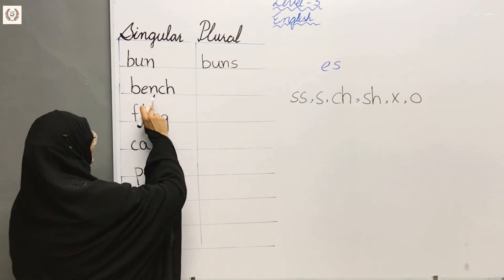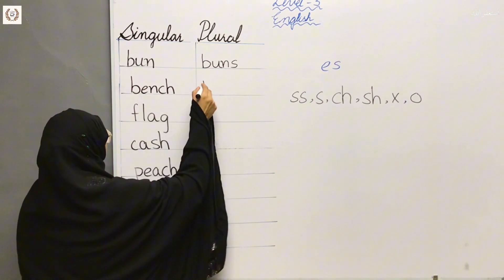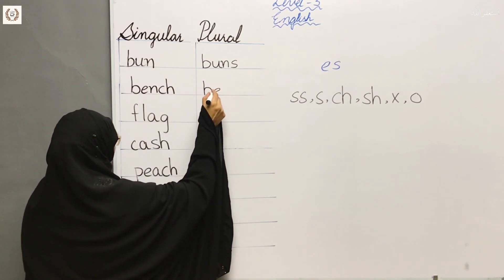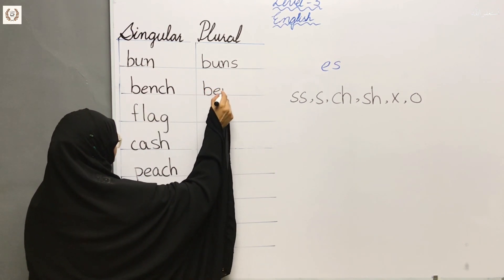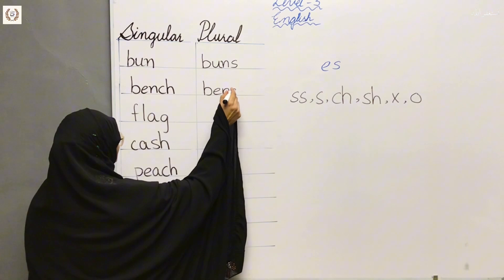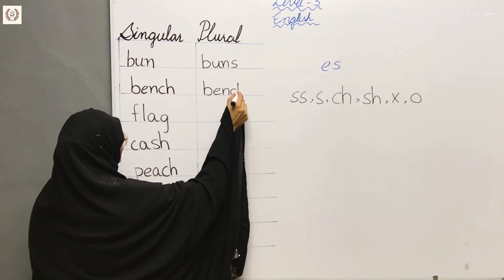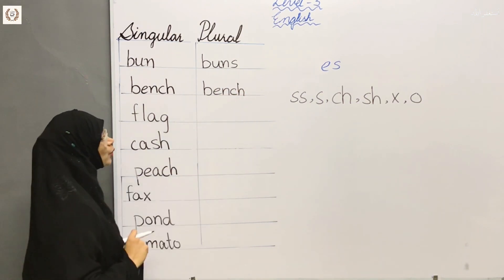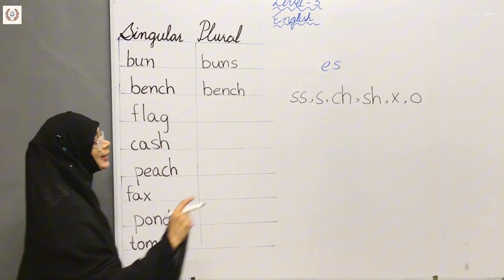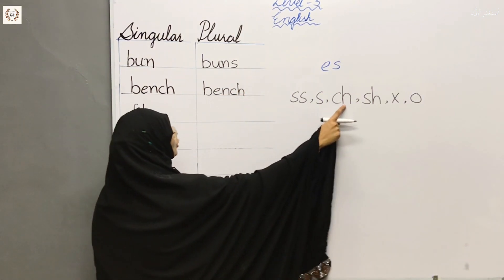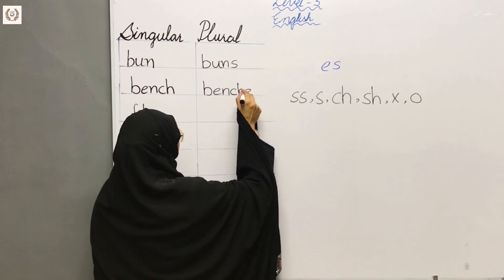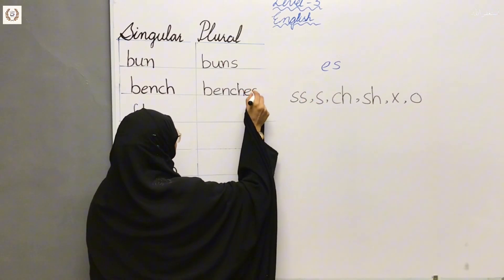Next: batch. B-E-N-C-H — how do you know that? When it ends in C-H, so when it ends in C-H, what do we add? ES. Benches.